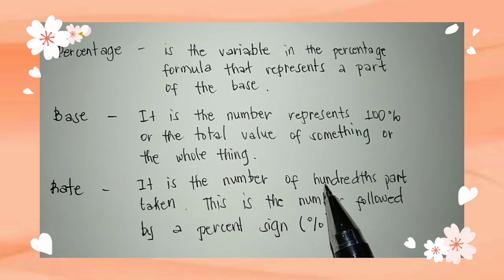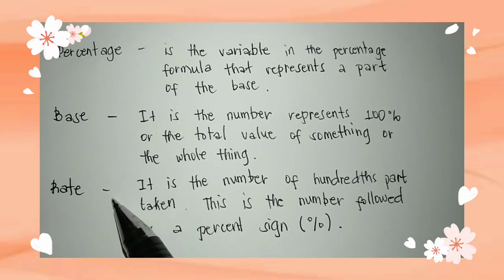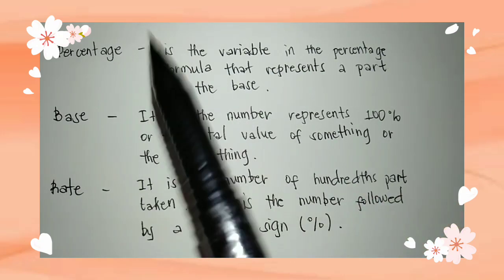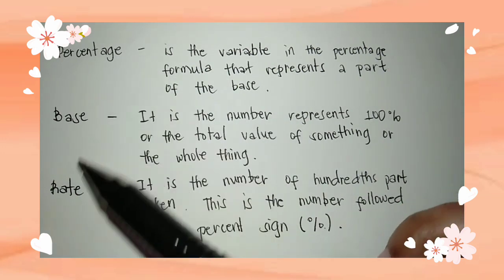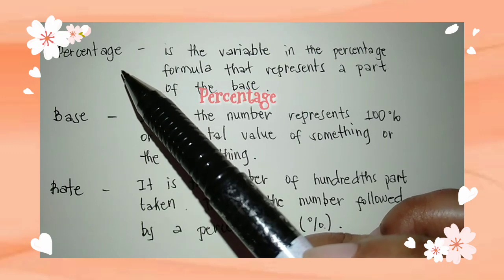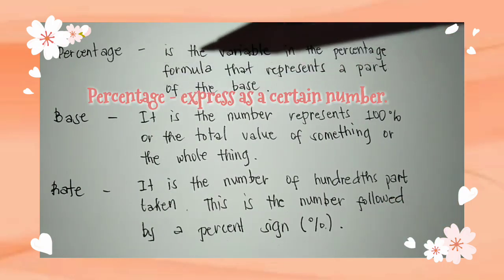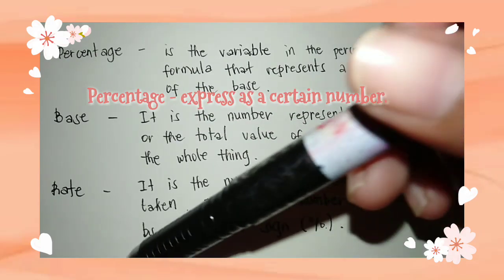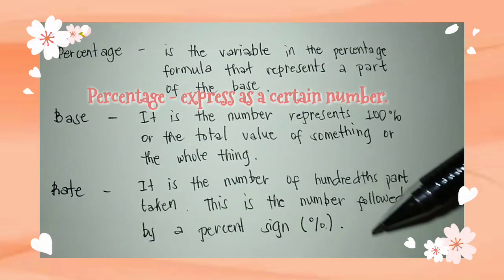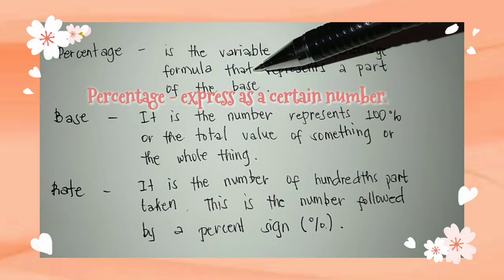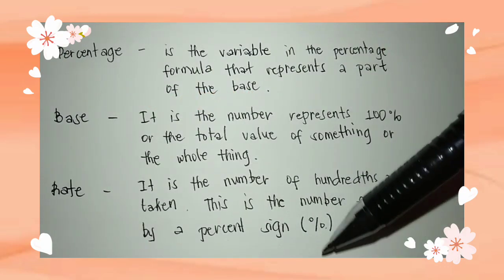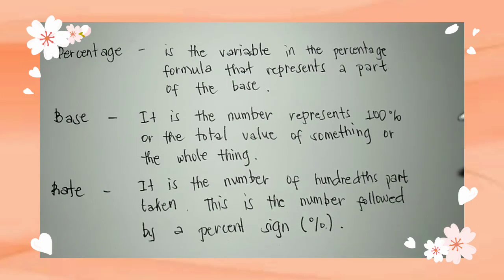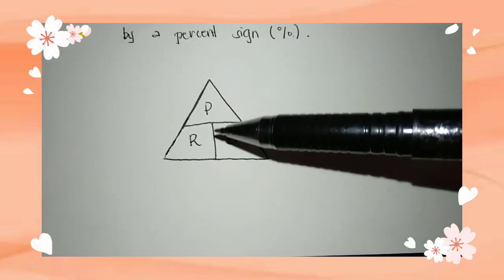The rate is the number of hundredths parts taken. It is the number followed by a percent sign — so rate is the one with the percent sign. Take note: percentage and rate look similar, but the difference is that percentage is expressed as a certain number taken from the base using the rate. It does not have a percent sign. While rate has the percent sign, or is the number of hundredths parts taken.